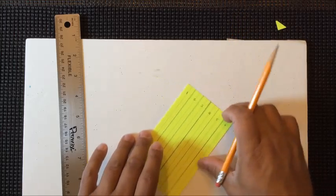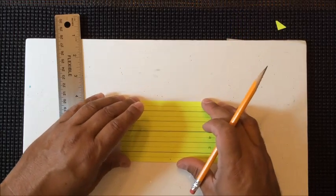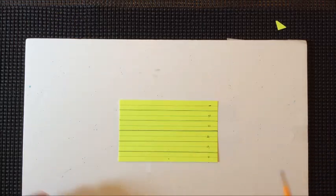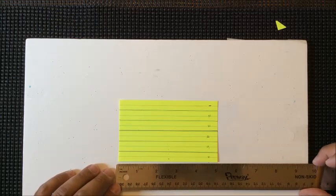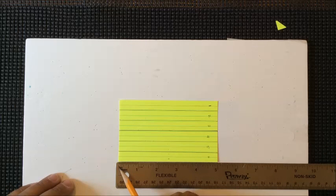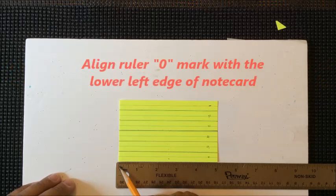I'm going to then turn the note card the original direction I had it horizontally across. And what I'll do now is align my ruler at the bottom edge of the note card. And so now what we learned from the bridge is where to find the zero mark of your ruler and align that with the edge of your note card.